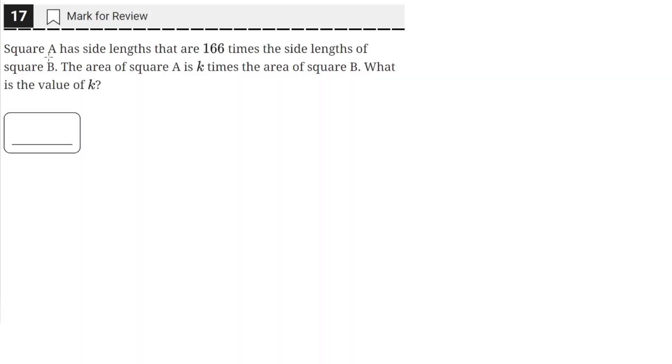Square A has side lengths that are 166 times the side lengths of square B. The area of square A is k times the area of square B. What is the value of k?